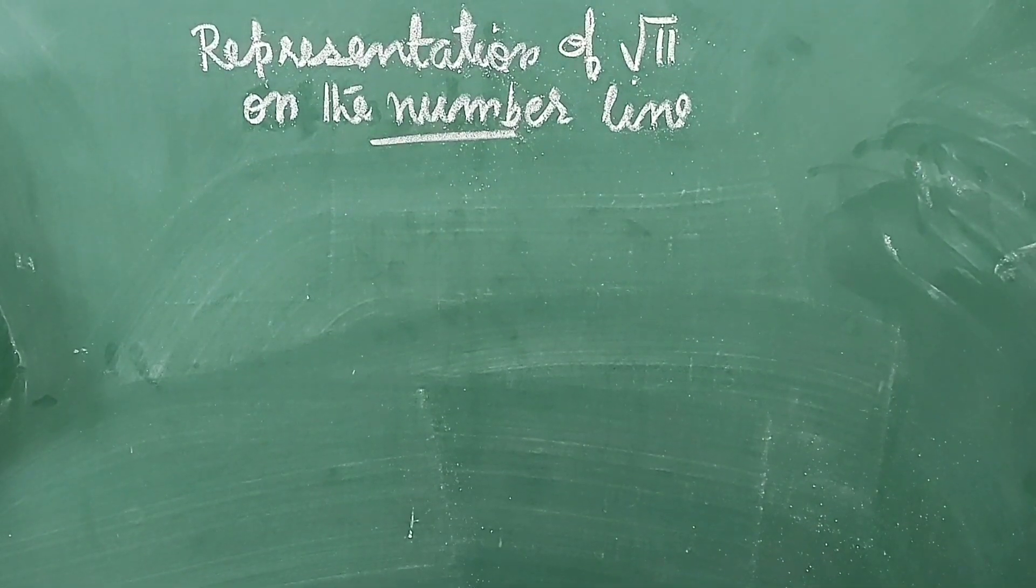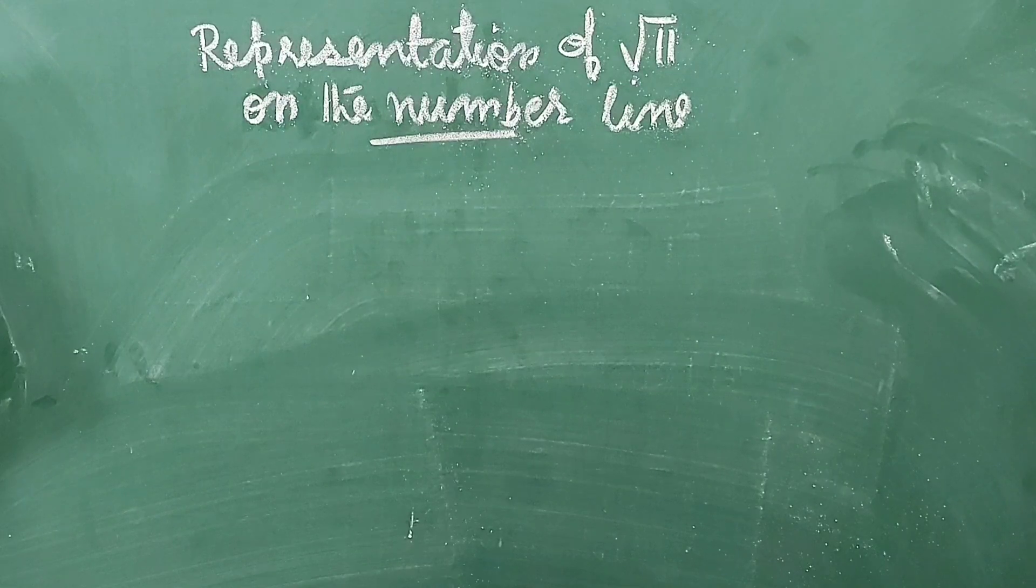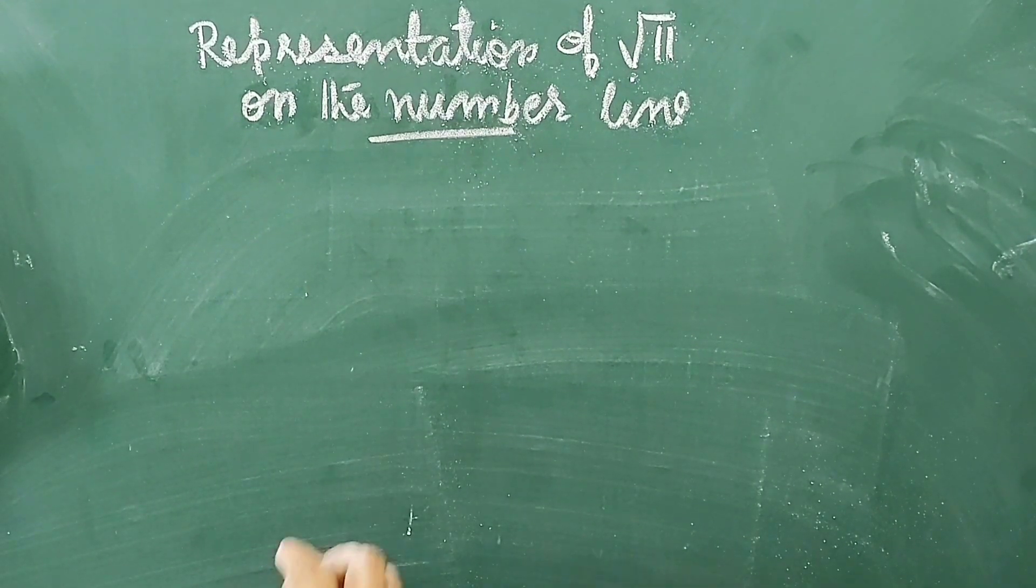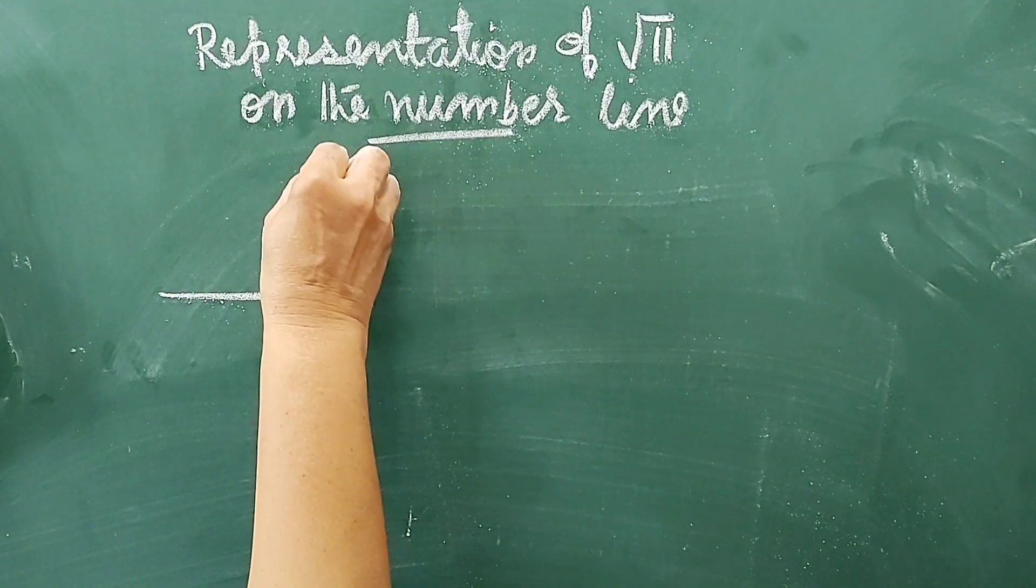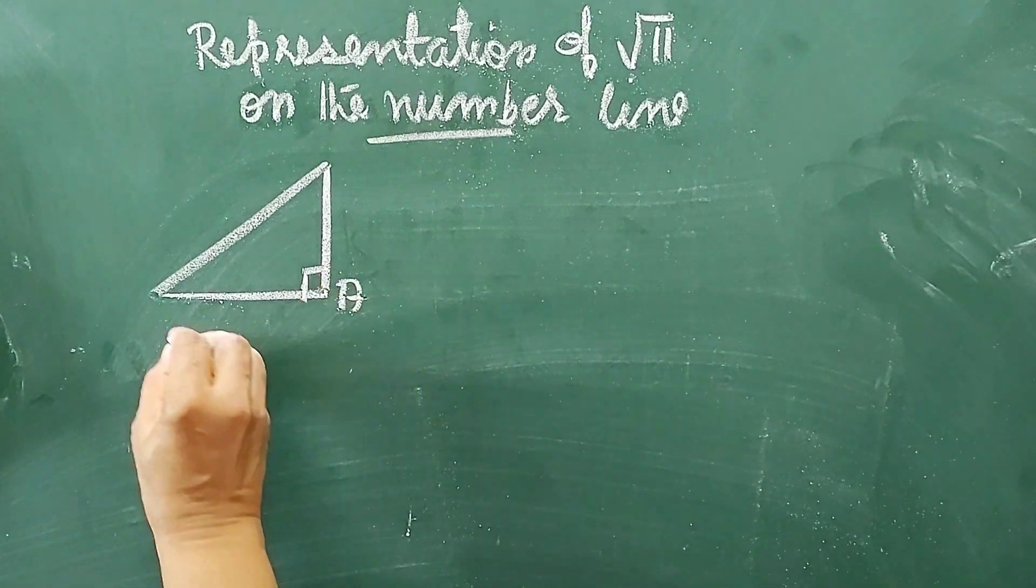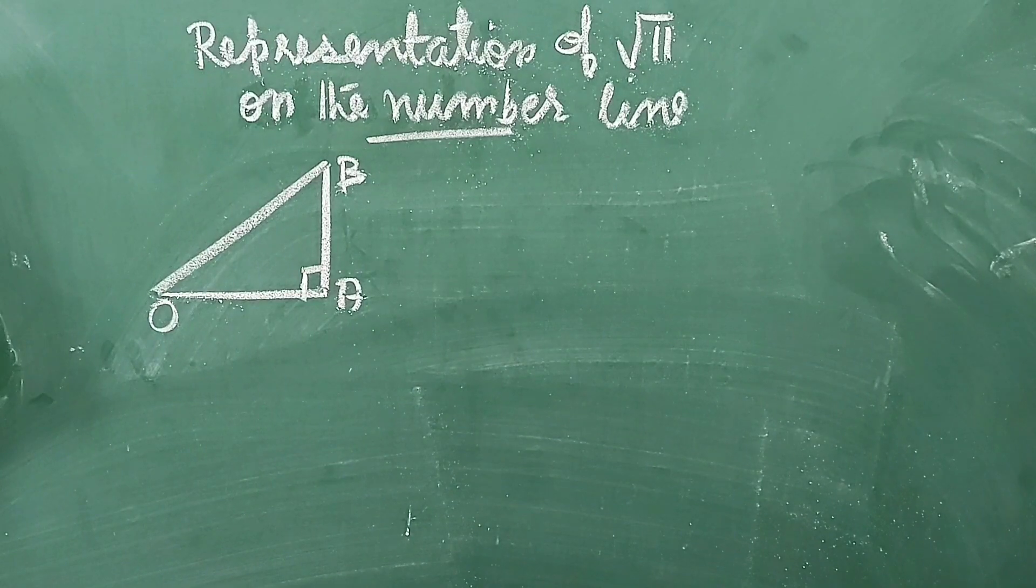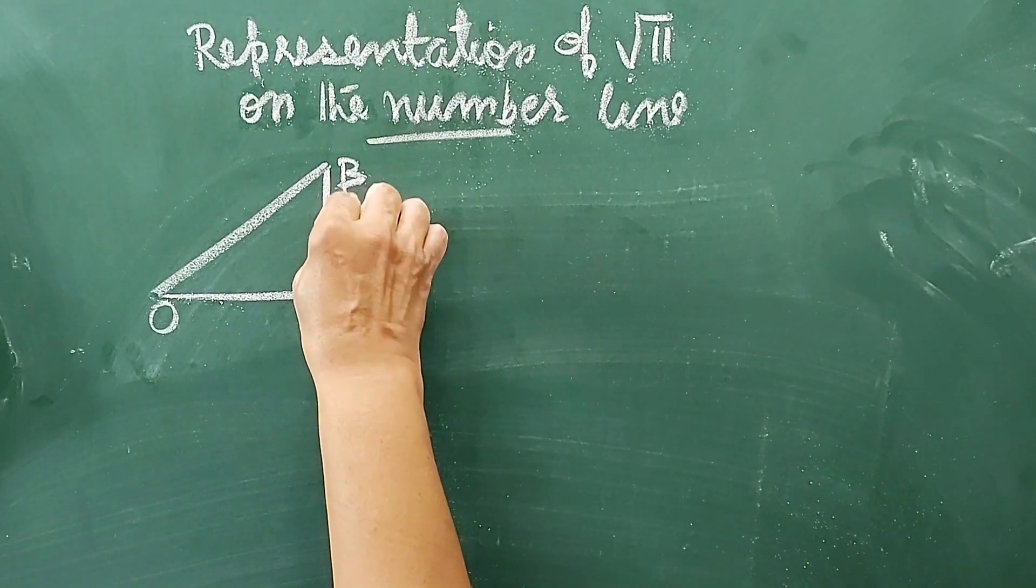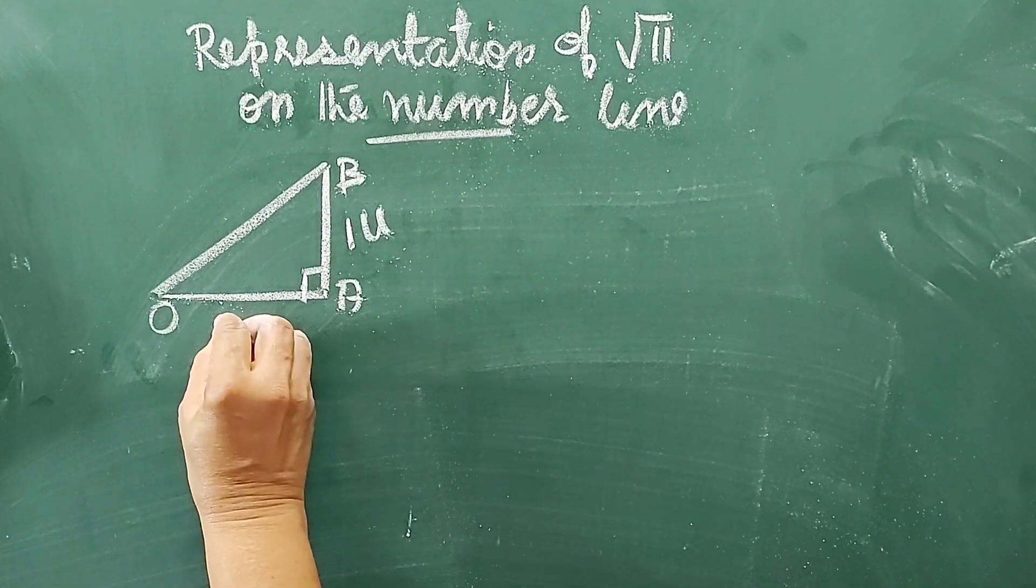Representation of √11 on the number line. To represent √11 on a number line, first of all, we consider a right-angled triangle, right-angled at A, that is OAB is a right-angled triangle.